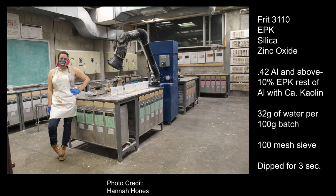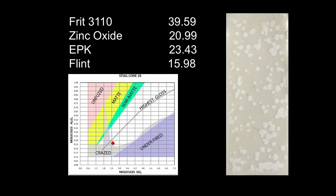I applied my tiles by dipping them for three seconds. The tiles were two-by-three porcelain. This is actually one of the glazes if you want a recipe. You can see it's really close to the craze region so I would not suggest it for functional ware — maybe on the outside of a pot.